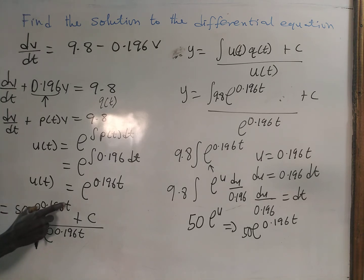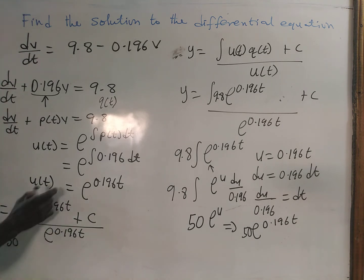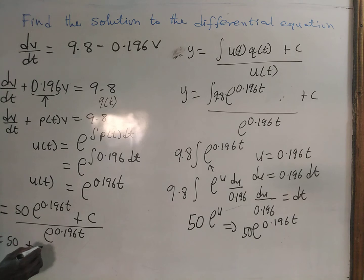We have y to be equal to 50 - this will divide this and cancel out - plus c times e to the power negative 0.196t as our general solution.